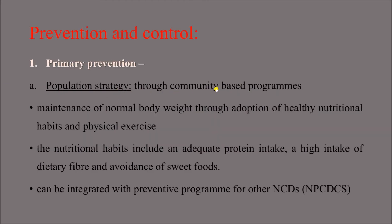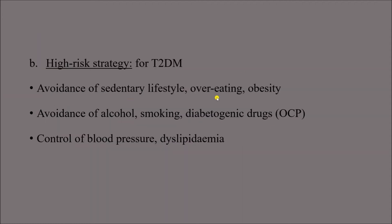Primary prevention can be through a population strategy or individual high-risk strategy. The population strategy involves community-based programs such as maintenance of normal body weight through healthy nutritional habits and physical exercise — including adequate protein intake and high intake of dietary fiber — and can be integrated with programs for other NCDs through NPCDCS (National Programme for Prevention and Control of Cancer, Diabetes, Cardiovascular Diseases and Stroke). The high-risk strategy involves avoidance of sedentary lifestyle, overeating, obesity, alcohol, smoking, and diabetogenic drugs like OCPs.